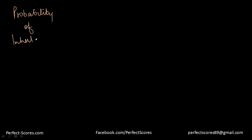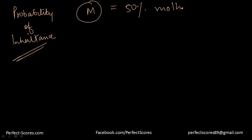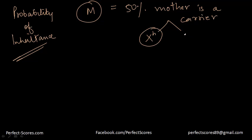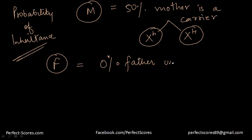Now let's look at a few statistics on probability of inheritance. In case of a male, the probability of inheritance is 50% if the mother is a carrier — there are 50% chances she will transfer the recessive X gene and 50% chances she will transfer the dominant gene. The probability of inheritance in a female is 0% if the father is unaffected, because a female needs both recessive alleles to have the disease, and an unaffected father has no recessive allele to give. So this was all you need to know about color blindness and hemophilia — both work in the same way. Thank you so much for watching.